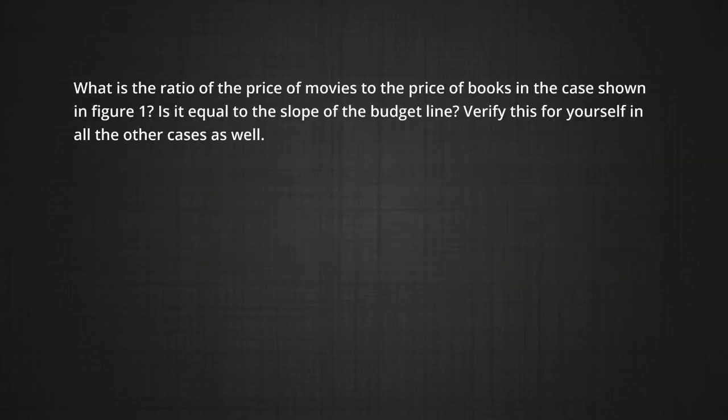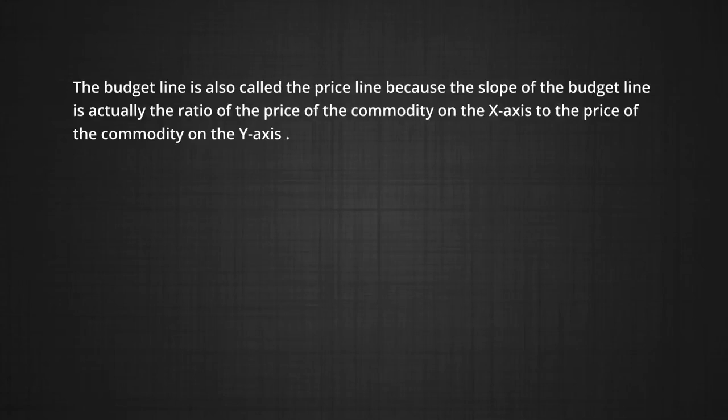The ratio of the price of movie tickets to the price of books in figure 1 equals the slope of the budget line. You can verify this for yourself in all the other cases as well. The budget line is called a price line because its slope is the ratio of the price of the commodity on the x-axis to the price of the commodity on the y-axis.